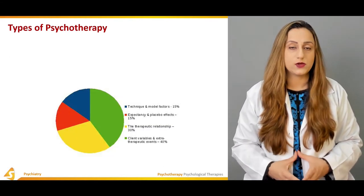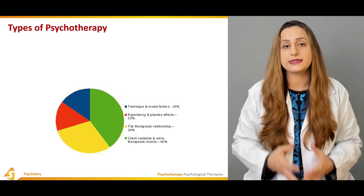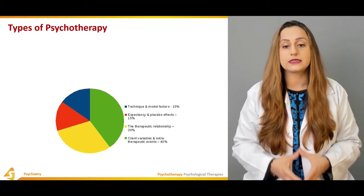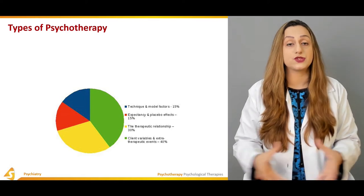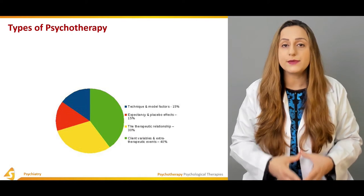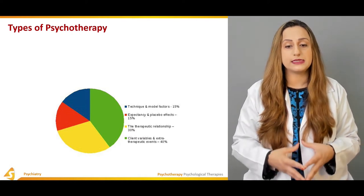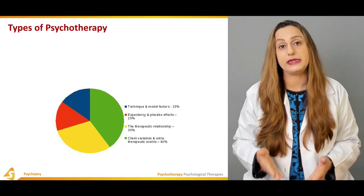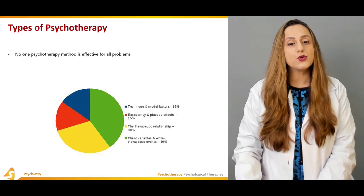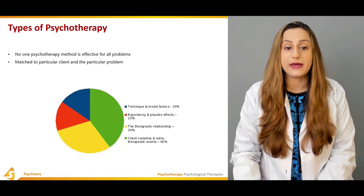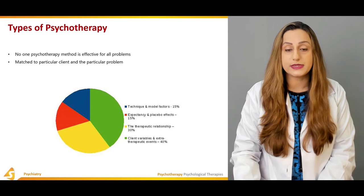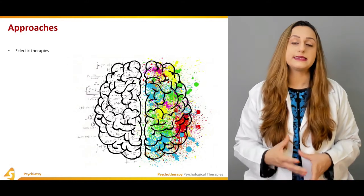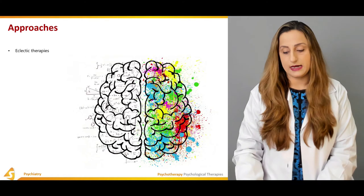There are a lot of types of psychotherapies, and various factors contribute to outcomes as shown in a pie chart. It ranges from techniques and model factors — the expectancy and placebo effect are sometimes used to assess effectiveness. The therapeutic relationship accounts for almost 30 percent. Client variables and extra-therapeutic events can also affect outcomes. No single psychotherapy method is effective for all problems; it must be matched to the particular client and problem. This includes the eclectic therapies already in use.